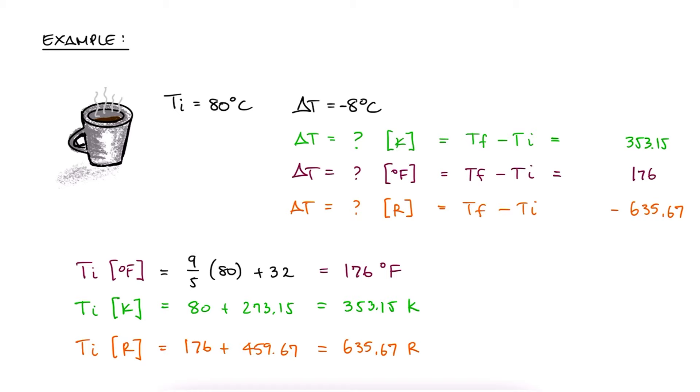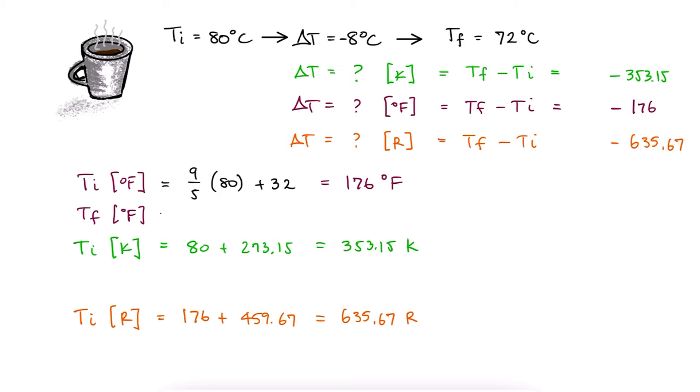A drop of 8 degrees Celsius brings the final temperature to 72 C. Going over the same set of calculations, we obtain 161.6 degrees Fahrenheit, 345.15 Kelvin and 621.27 Rankine.